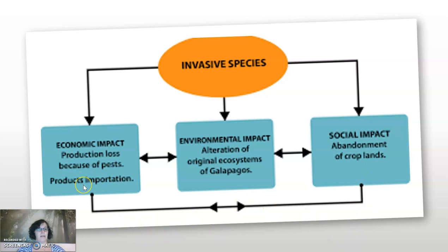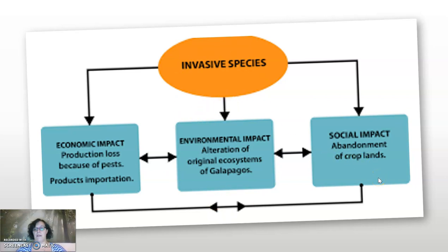For example, economic impact is the production loss due to invasive species pests, which can lead to either environmental or social impact. Environmental impact is the alteration of original ecosystems — for example, in the Galapagos, the Galapagos tortoise are facing extinction because of invasive species. The social impact is the abandonment of croplands, because farmers are unable to eradicate invasive plants or animals inhabiting their croplands and are forced to leave.